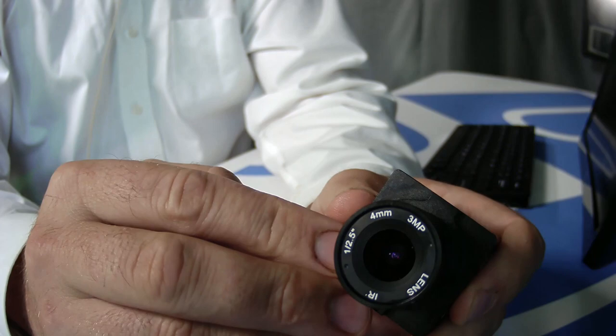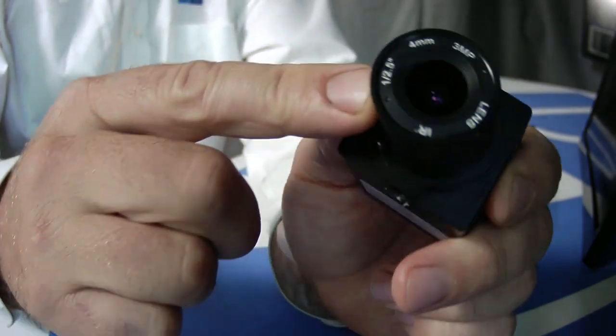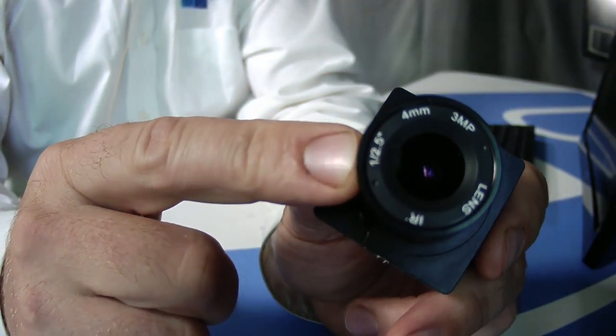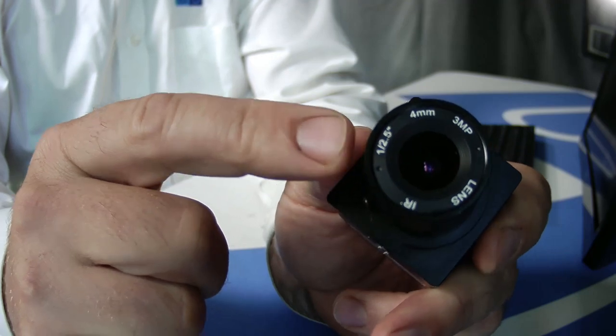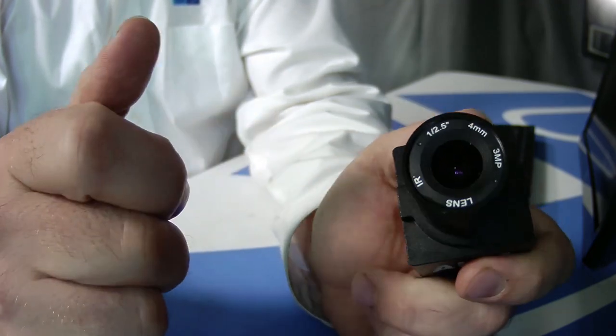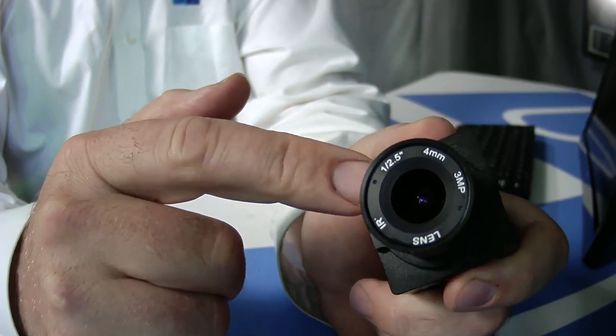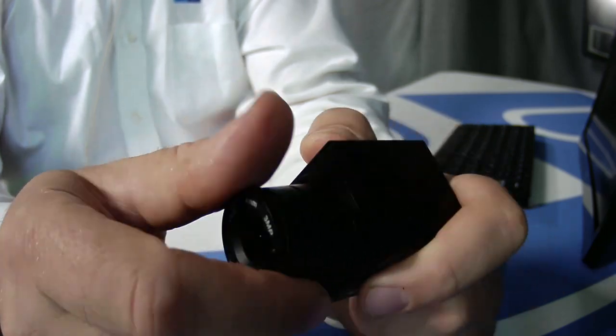On the front is a lens that the unit comes with, so it's got a four millimeter lens that is stock, and it's a great beginner lens. It's a great lens for it to come with.